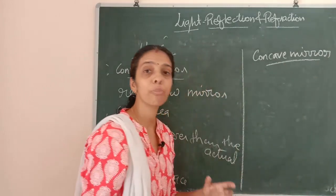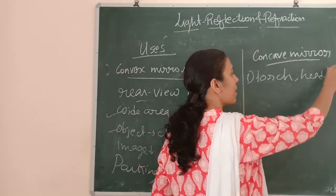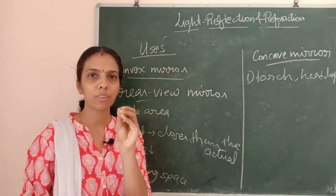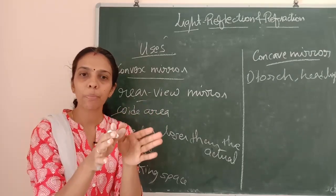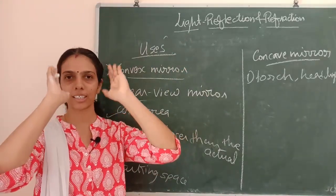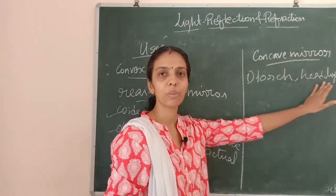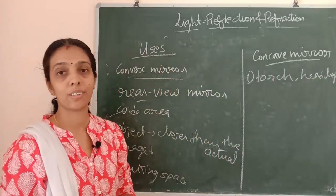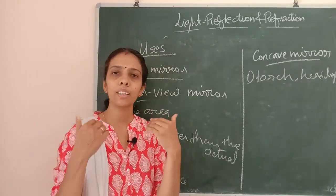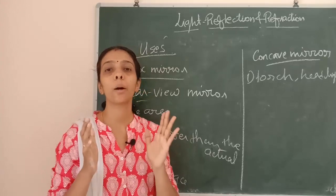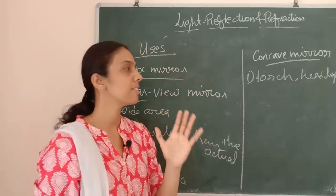For concave mirrors, they are used in torches, headlights, and search lights. At the position of the principal focus, the bulb is placed. The concave mirror shape causes the rays coming from the principal focus to reflect and go parallel after reflection. So we get a parallel beam of rays traveling a long distance — that is why concave mirrors are used in headlights and torches.